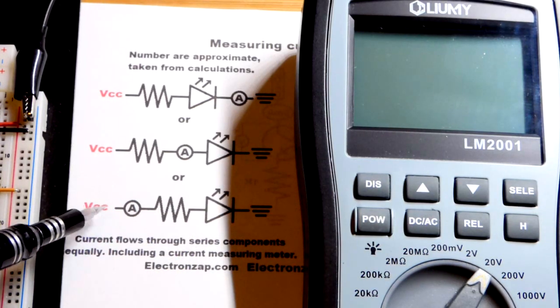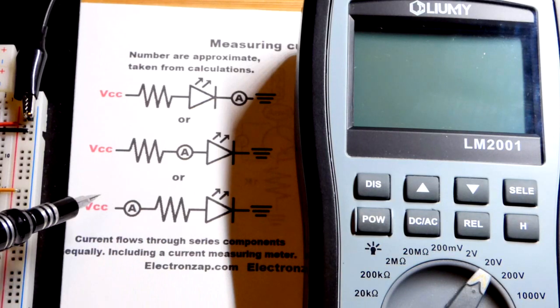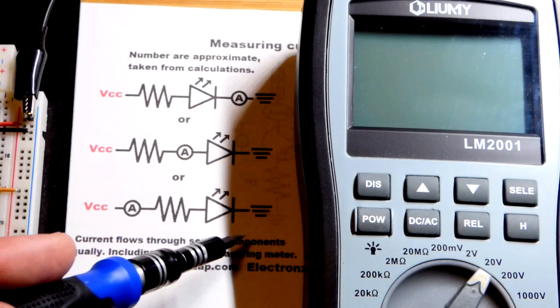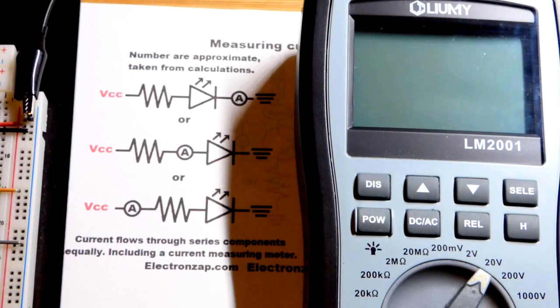You don't want to measure the current of a power supply because current is going to run through the meter freely and it may burn it out. So let's get to that.